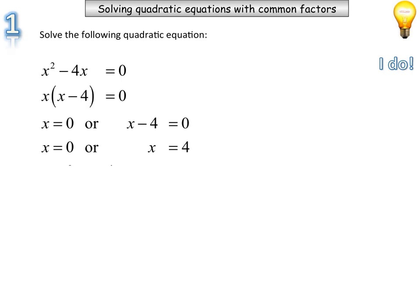So x is equal to 0 or x is equal to 4. As we get that negative 4 to the other side, it becomes a positive, so we have 4. So x is equal to 0 or 4.